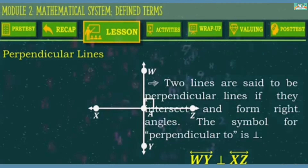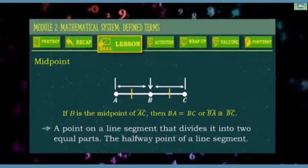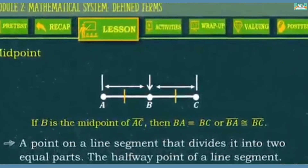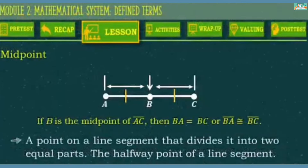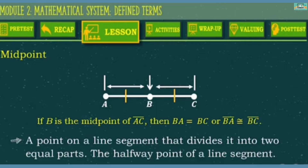Now let's try to define other terms. Points A, B, and C are collinear points and B is at the center of line segment AC, wherein point B divides the line segment into two equal parts. This is what you call a midpoint. A midpoint is a point on a line segment that divides it into two equal parts — the halfway point of a line segment. So, based on our figure, if B is the midpoint of line segment AC, then BA is equal to BC, or line segment BA is congruent to line segment BC.